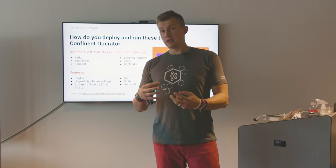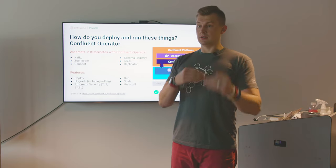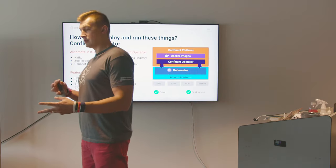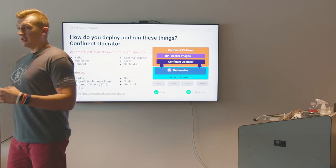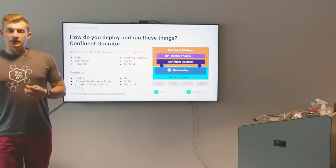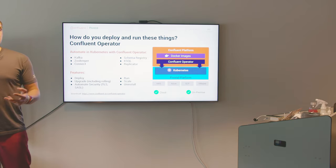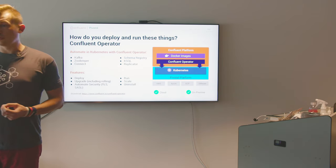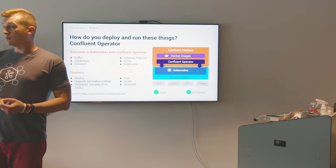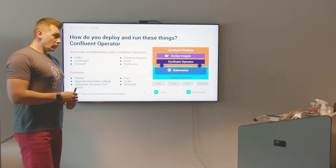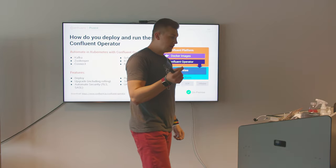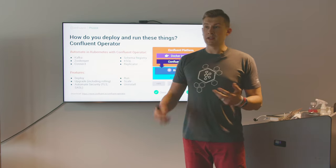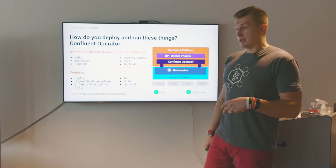You think of ksqlDB as an engine that allows you to run continuous queries. Recent releases include powerful features like two types of queries: continuous queries and pull queries — point-in-time queries where you can query state immediately. When I talk to people, they often ask how to join data in Kafka with data in a database. That's where Kafka Connect comes in — it's part of the Apache Kafka platform, a framework and runtime where connectors are managed.